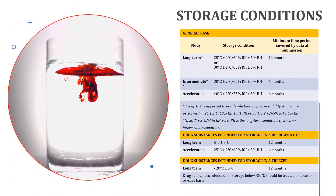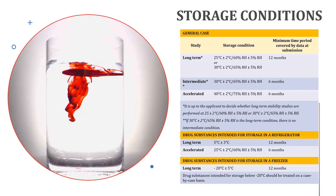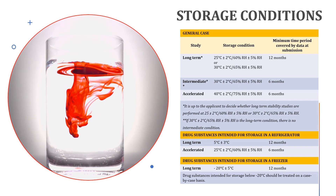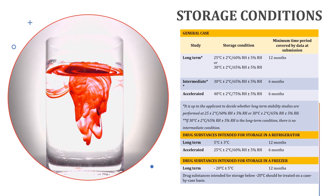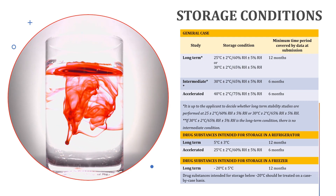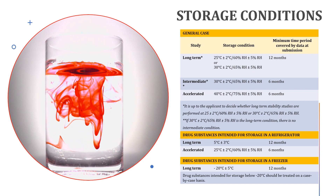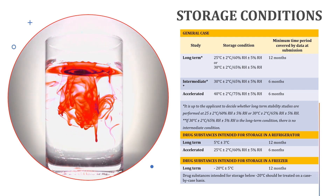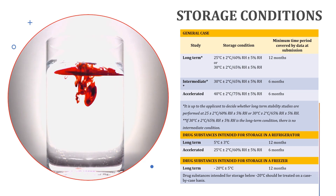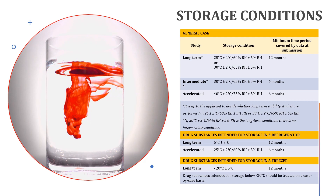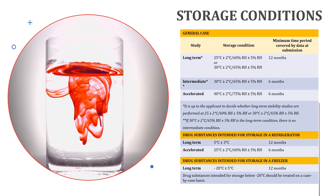Let us now look at the storage conditions used in ICH guidelines. Consider coconut oil in cold weather — it becomes solid and hard to use, whereas some coconut oils are made with special methods and additives to prevent freezing. Similarly, medicines must be tested in different conditions to make sure they can be used in different places without being affected by the environment. Drug substances and dosage forms must be tested under different ICH stability storage conditions over a period of time to ensure no significant change, which determines the shelf life.